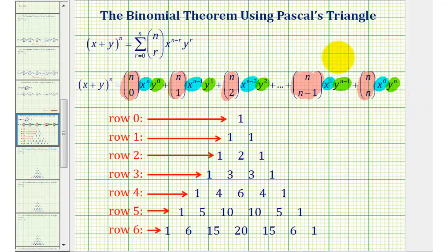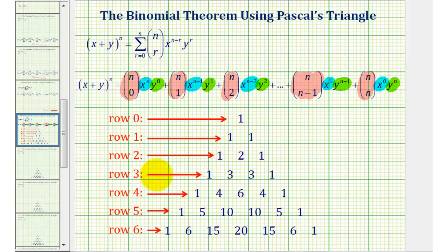In this video, to help us evaluate these combinations, we're actually going to use Pascal's triangle, where we can find the value of each combination by finding the row that matches the original exponent on the binomial. We just have to remember that we call the first row row zero, followed by row one, two, three, four, five, and so on.